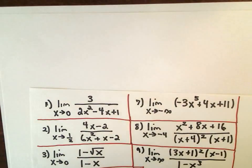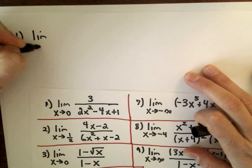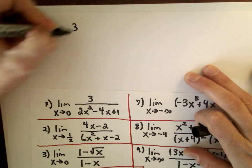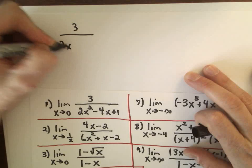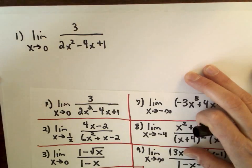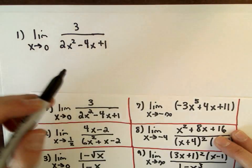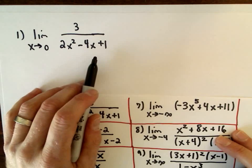We'll just take them in order. Grab some popcorn. Okay, so number one. The limit as x approaches 0 of 3 divided by 2x squared minus 4x plus 1.